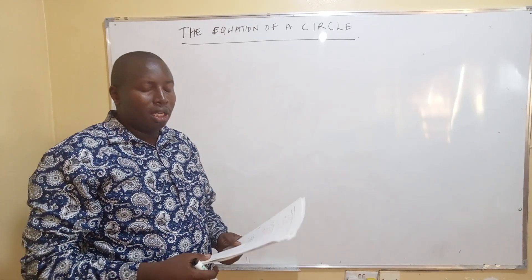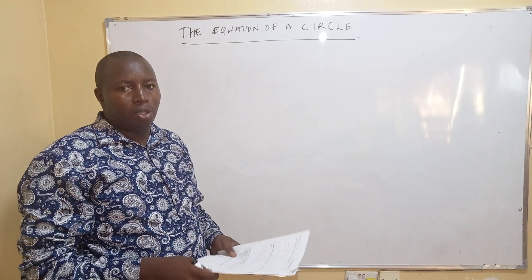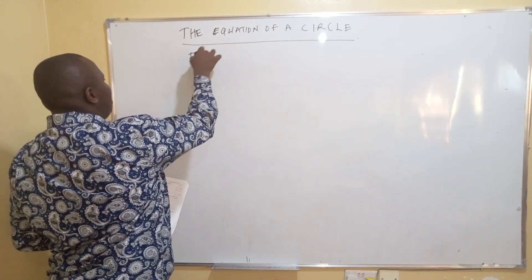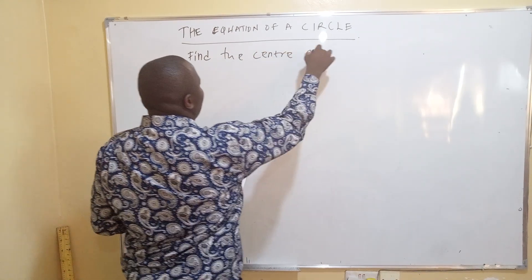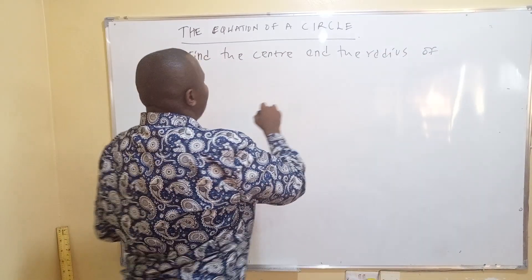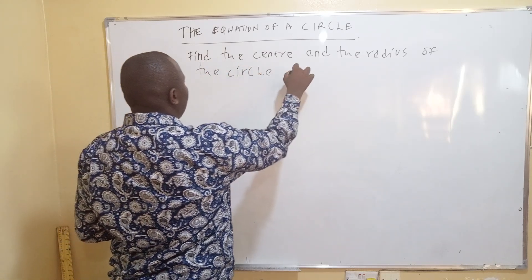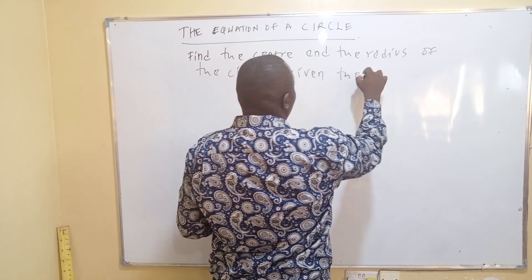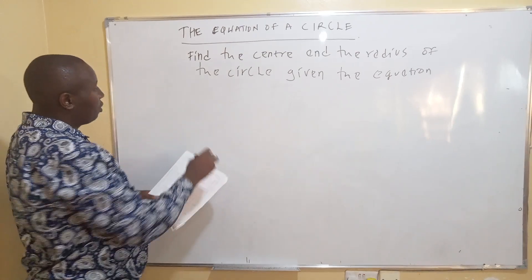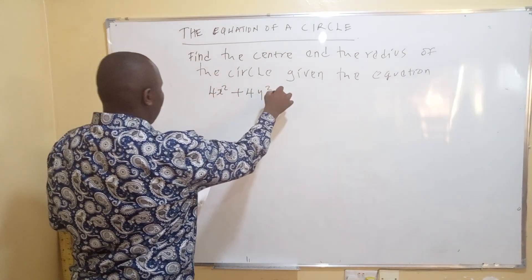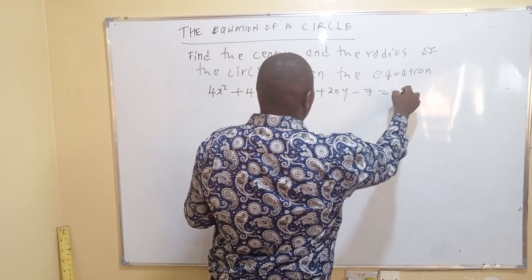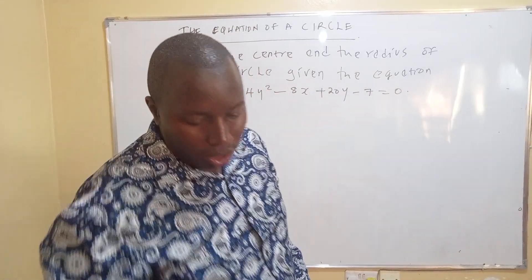I'm going to provide a question for the equation of a circle. You have to find the center and the radius of the circle, given the equation: 4x squared plus 4y squared minus 8x plus 20y minus 7 is equal to 0.